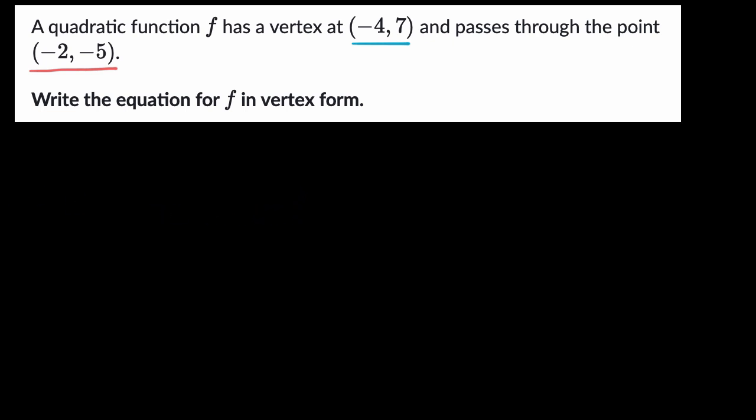All right, so first let's think about the general form of vertex form. If you have a quadratic function f, it's a function of x. You're going to have some number a times x minus h squared plus k. And we'll talk in a little second what a, h and k are.